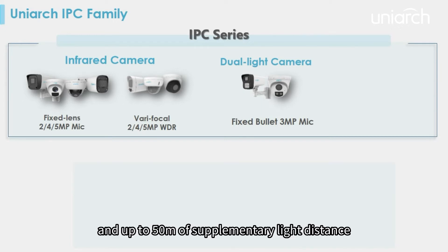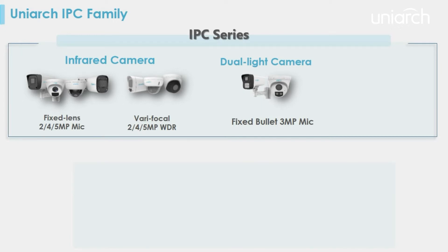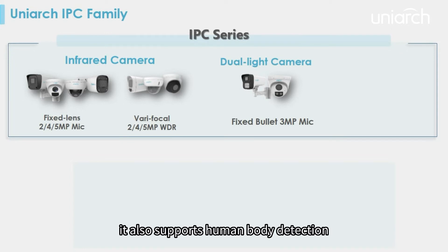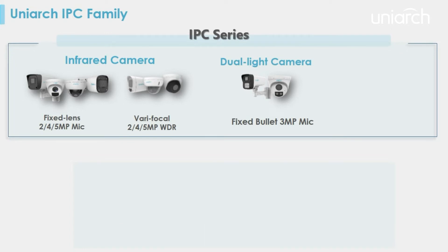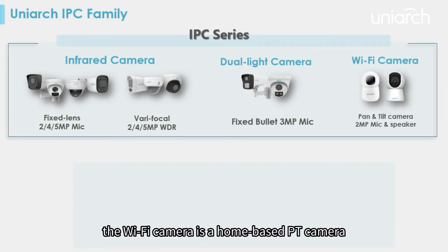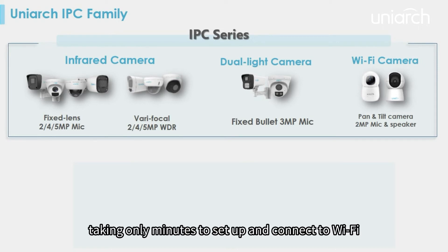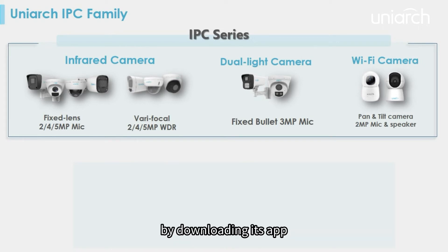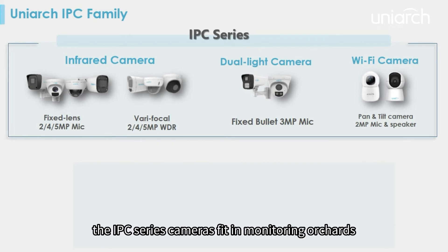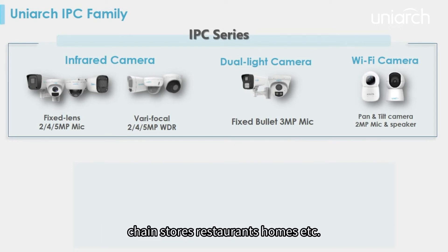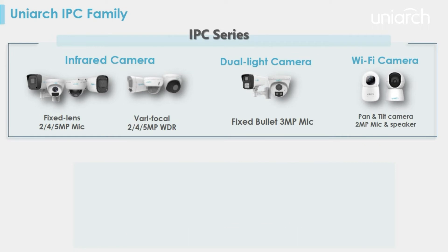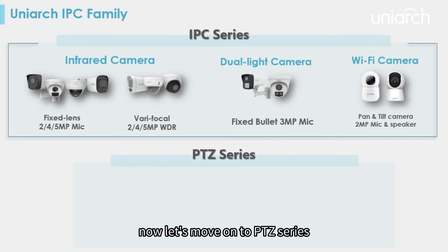The dual light camera also supports human body detection. The Wi-Fi camera is a home-based PT camera — it is easy to use, taking only minutes to set up and connect to Wi-Fi by downloading its app. In general, the IPC series cameras fit monitoring orchards, chain stores, restaurants, homes, and more.